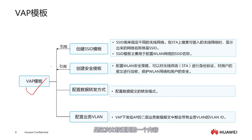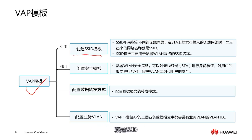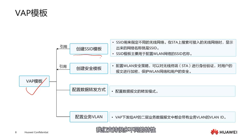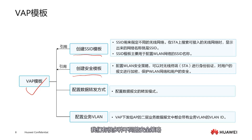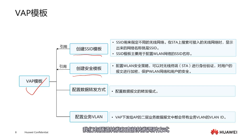Let's look at the VAP template, which is an important focus this time. VAP templates need to be bound to APs or AP groups. First is the SSID template — the wireless signal name that users search for is the SSID, and it can have many different features, such as hiding the SSID when the user limit is reached. Second is the security template. We have many different security strategies configured in the security template, then referenced in the VAP template, which is bound to the AP. Our AP will then utilize these security strategies.